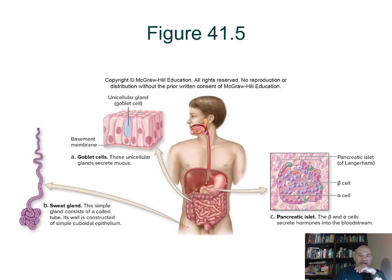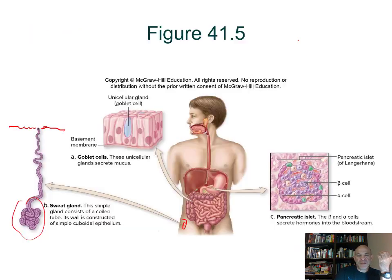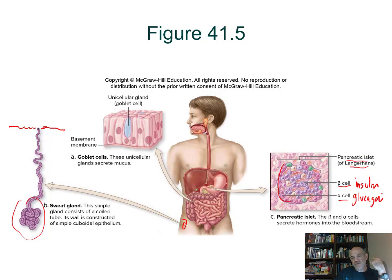The sweat gland is an exocrine gland. The pancreas has both exocrine function — producing digestive juices via ducts to the intestine — and endocrine function. Pancreatic islets (islets of Langerhans) contain beta cells that secrete insulin into the blood to control blood sugar, and alpha cells that secrete glucagon, which does the opposite of insulin. These two hormones regulate blood sugar levels.